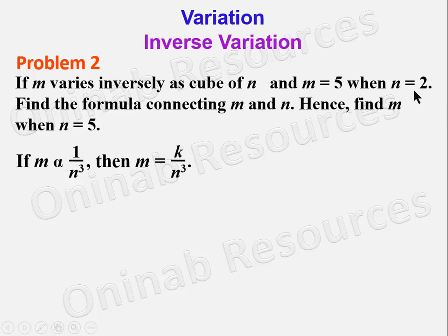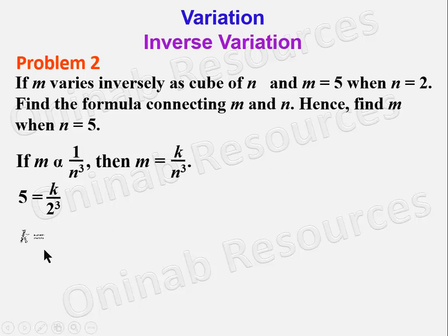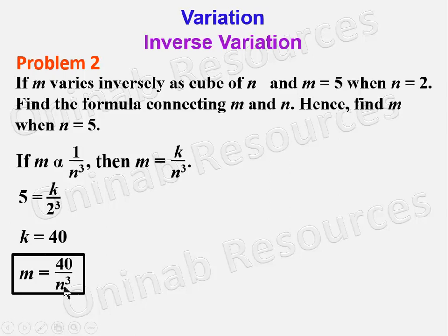We substitute m = 5 and n = 2: 5 = k/2³. Since 2³ = 8, we get k = 5 × 8 = 40. Since k = 40, to find the formula connecting m and n we substitute k into the relation, giving m = 40/n³.